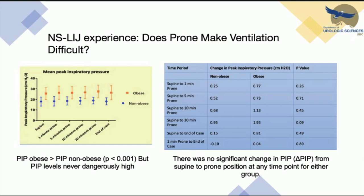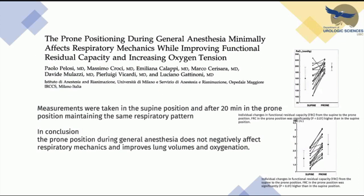A 1996 paper investigated the effects of prone position on mechanical properties — compliance, resistance, functional residual capacity, and gas exchange — in 17 normal anesthetized patients. Measurements were taken supine and after 20 minutes prone. They concluded that prone position during general anesthesia does not negatively affect respiratory mechanics and may actually improve lung volume and oxygenation.